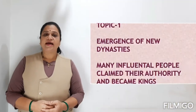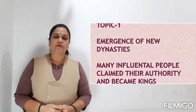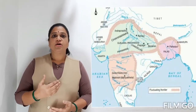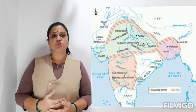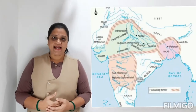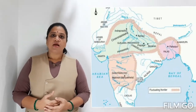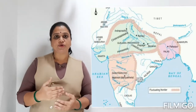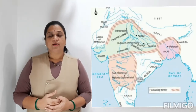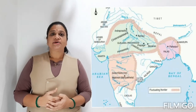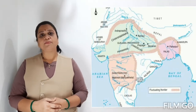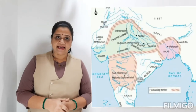In lecture number 1, we studied about the emergence of the new dynasties: the Rashtrakuta dynasty, Gujara Pratihara dynasty, Chola dynasty, and Pala dynasty. These ruling dynasties had specific regions to rule, but they tried to expand their regions by gaining power over other areas.